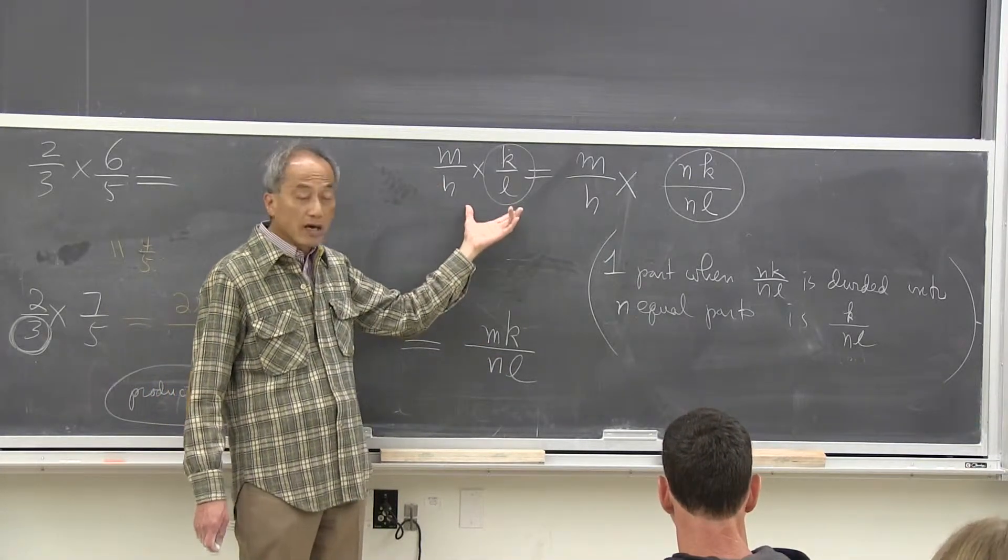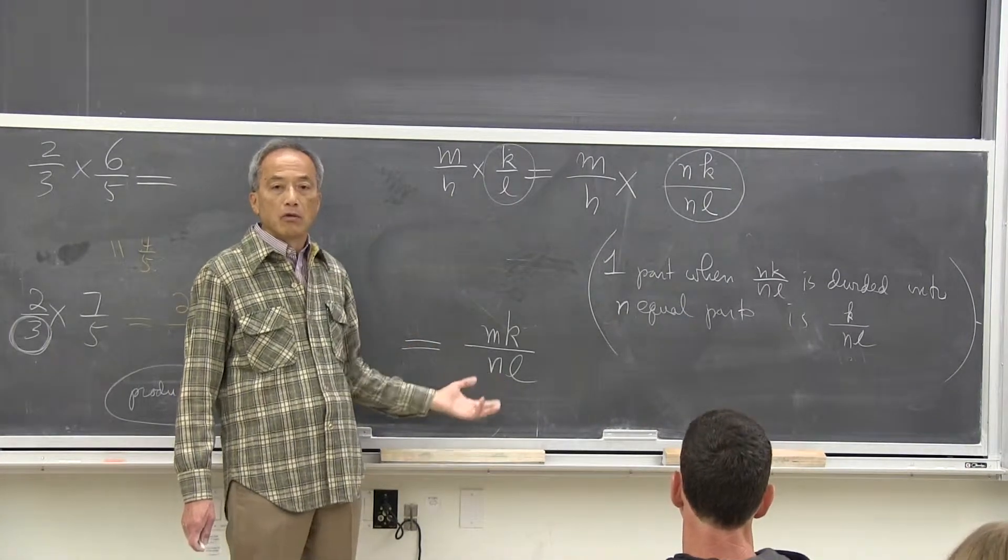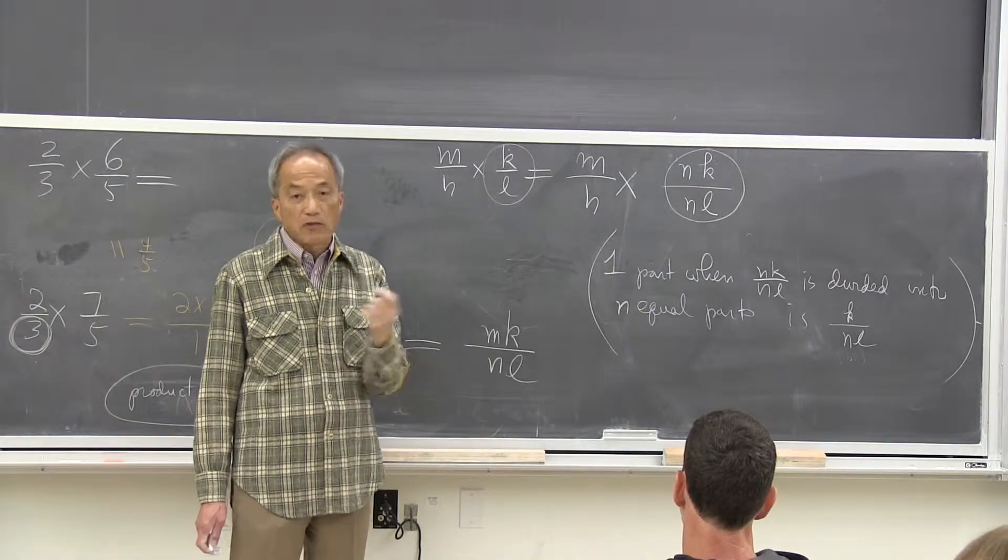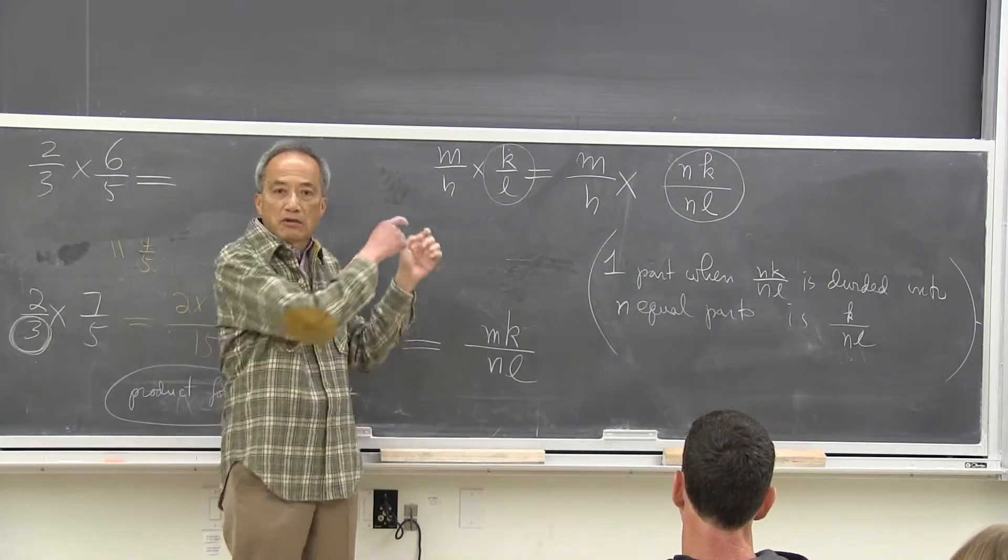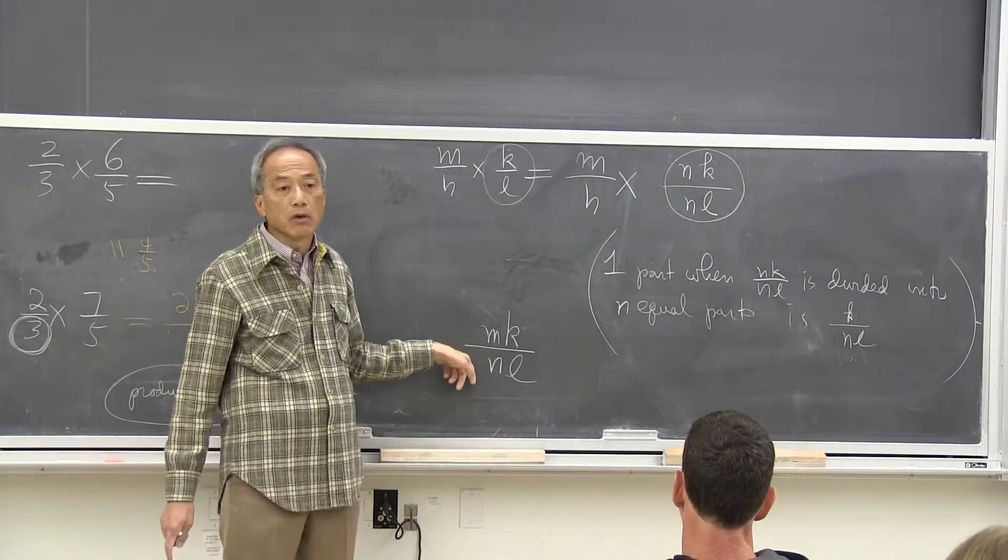M over N times K over L is equal to MK over NL. So understanding that definition is not a virtue in itself, but rather, I understand it with the view towards going towards this goal. And that's how it shapes your thinking.